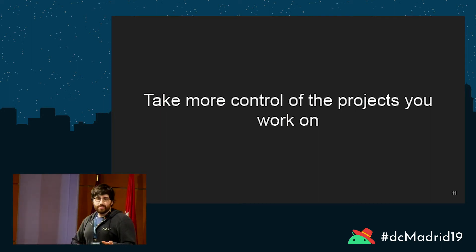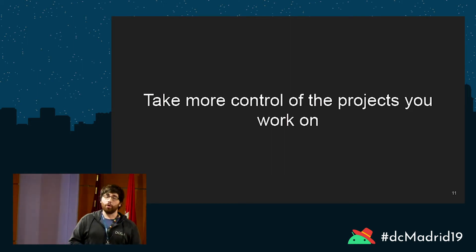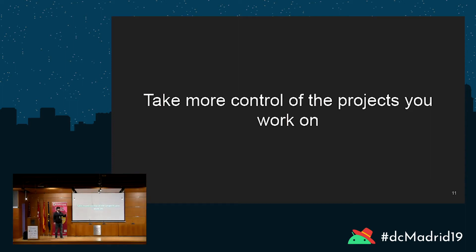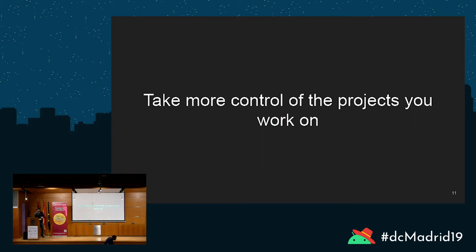When you contribute to open source or look at these projects, you get to take more control of what you're working on. It's not that you can just open OKHttp and decide you want it to be a certain way — there are rules and context. But you can decide which project you work on. If you're interested in the networking stack and how OKHttp does its job, or image loading in Picasso or Glide, you can decide that's what you want to be looking at over the next however many weeks.